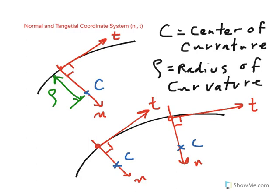The only time that the center of curvature and the radius of curvature is constant and the center of curvature is constant, is when you're traveling along a circular path. So let's say if an object is traveling along a circle, then.